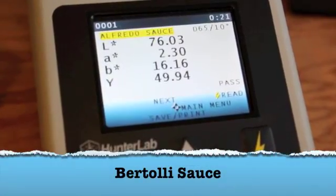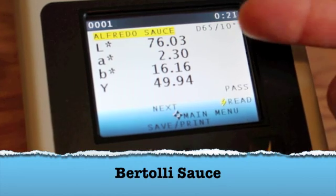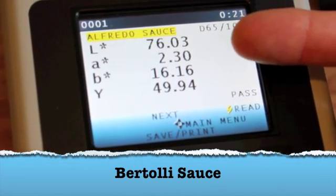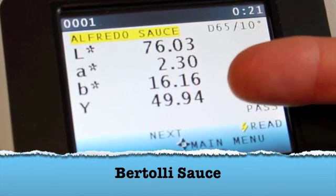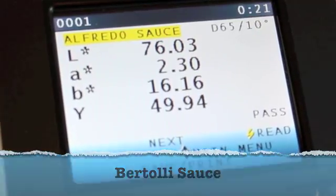In this example, we're showing a light product with an L value of 76, an A value of 2, which shows a slight redness, and a B value of 16, which is a yellow product.